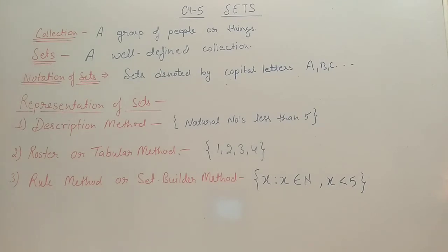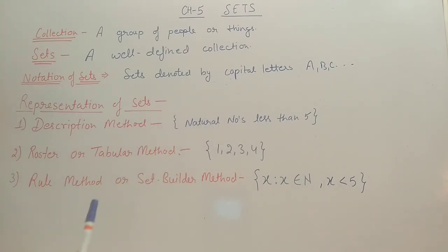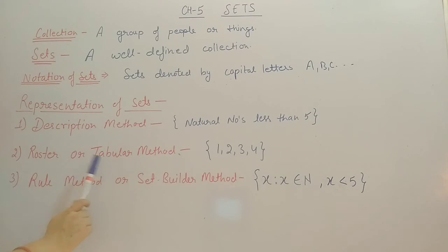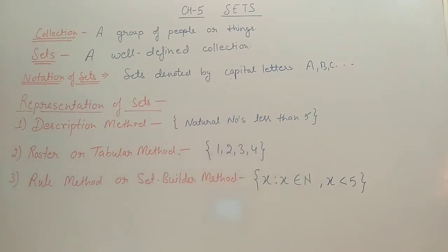Next is the representation of sets — how to represent a given set. There are three methods. The first is the description method, where we write the description inside flower brackets. For example, for natural numbers less than 5, we write: {natural numbers less than 5}. The second method is the roster or tabular form, where we write the actual elements inside the flower brackets — so for natural numbers less than 5: {1, 2, 3, 4}, separating elements by commas.